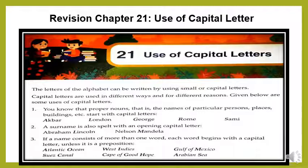Number 3. If a name consists of more than one word, each word begins with a capital letter, unless it is a preposition. If a name of a place or any other proper noun consists of more than one word, it starts with a capital letter. For example: Atlantic Ocean, West Indies, Gulf of Mexico, Suez Canal, Cape of Good Hope, Arabian Sea. All these are proper nouns consisting of more than one word, so they start with a capital letter.